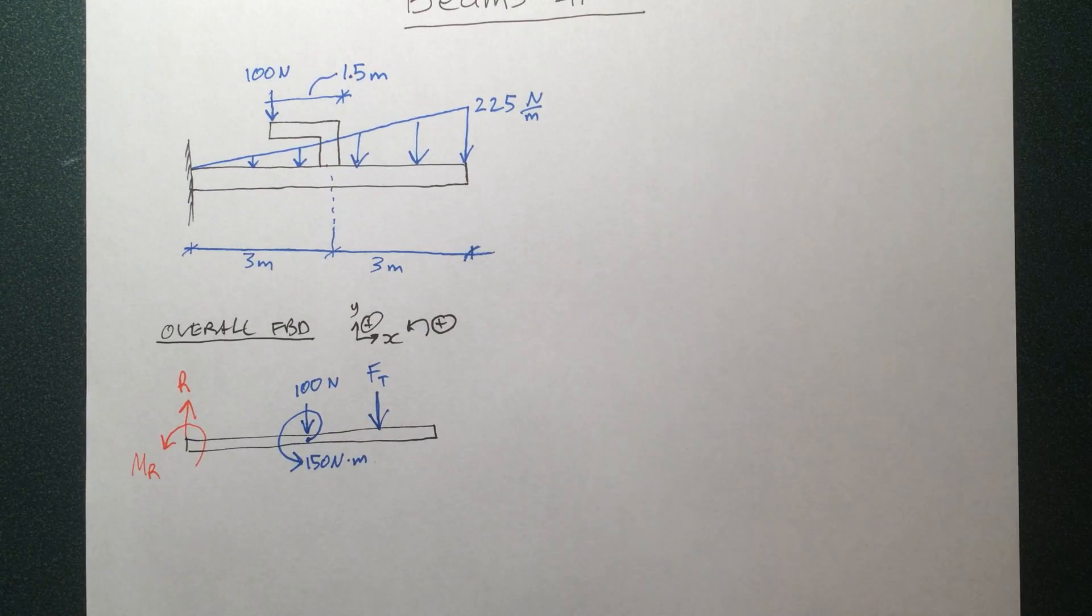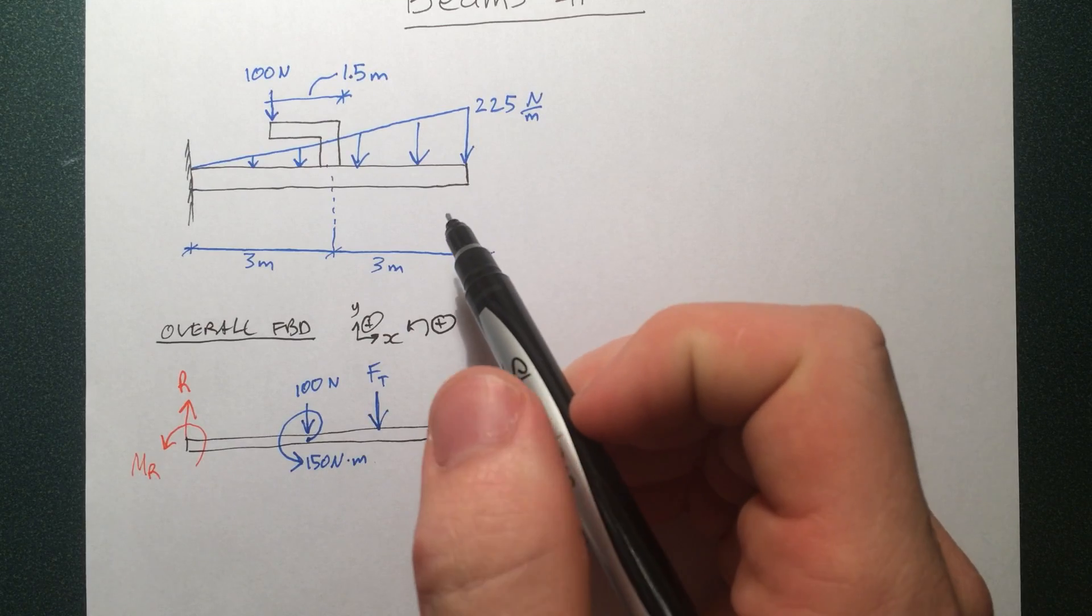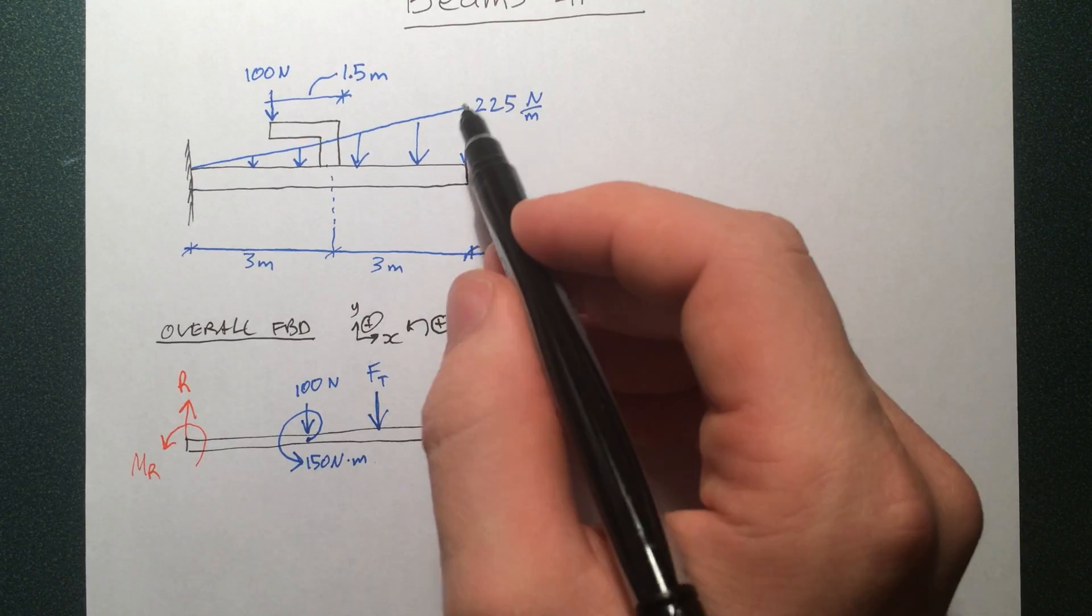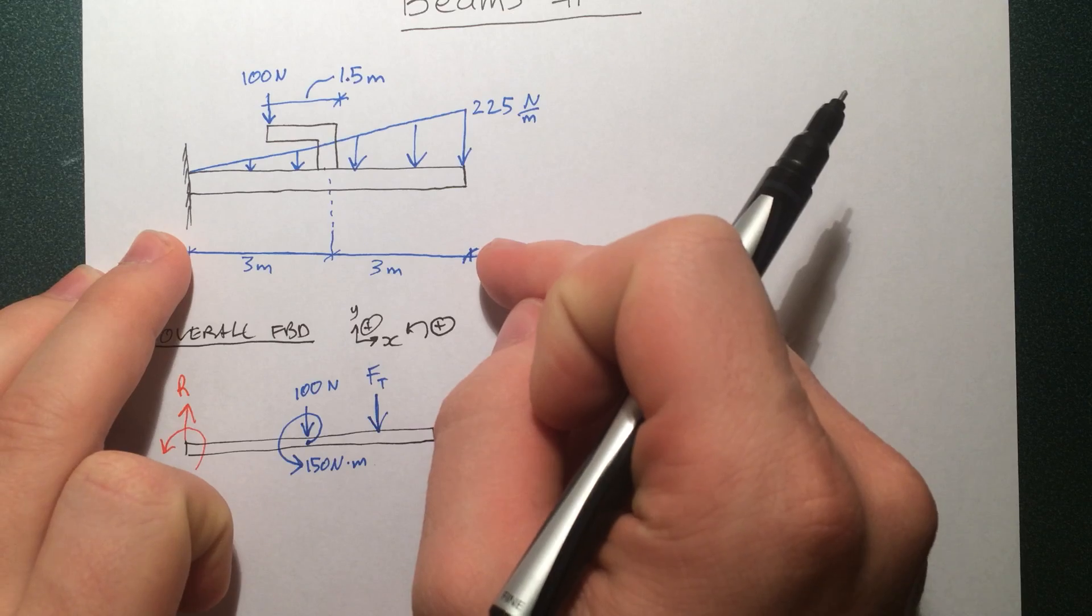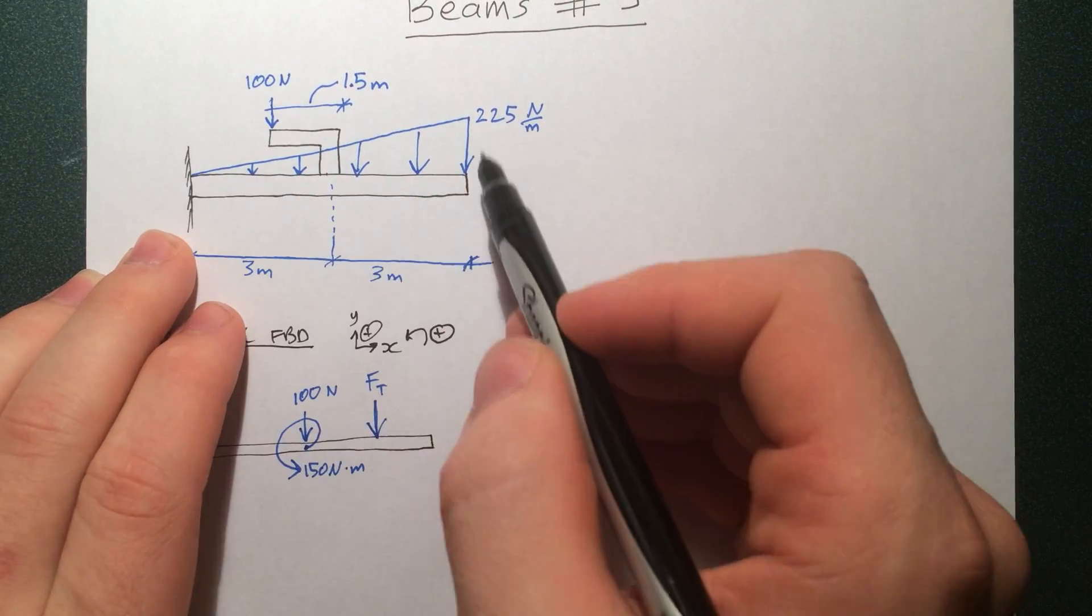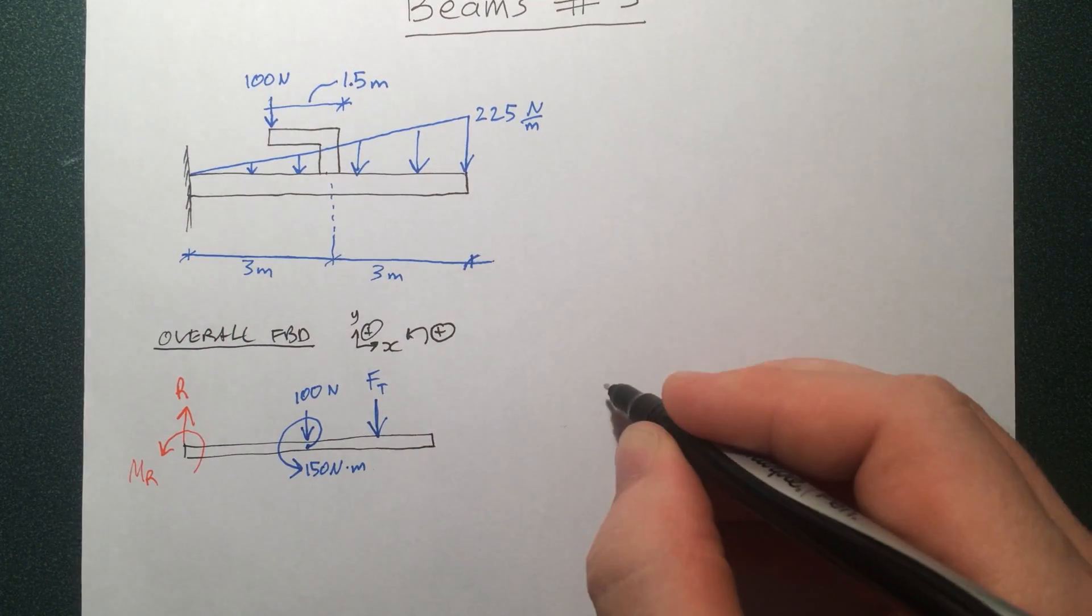Now we just need to go into what is the triangular force. The triangular force is just going to be the area of this thing. Because at the end, we know how many newtons per meter. So we times it by the total, so this would be 6 newtons per meter. That would give us all this space here. We don't want that, so we're just going to divide that by 2.